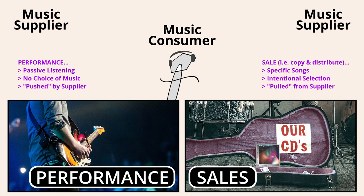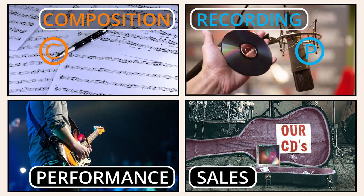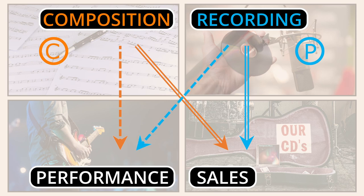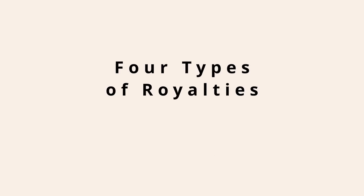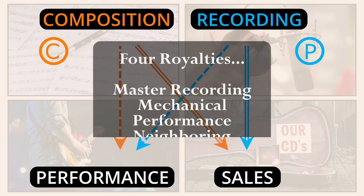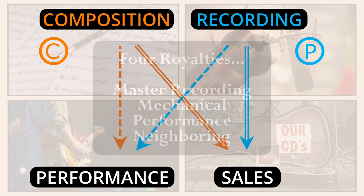Another way to think about it: a sale occurs when the music consumer pulls music from the music supplier. A performance occurs when the music supplier pushes music to the music consumer. Properly distinguishing between sales and performances is important when building the royalty flowchart. Performances and sales can occur for both compositions and recordings. In each of these four cases, a specific royalty for that use must be paid to the copyright holder. Our four key terms and the four arrows connecting them give rise to the four main types of music royalties: master recording, mechanical, performance, and neighboring royalties.